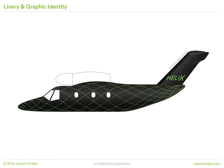More than just a superficially applied symbol, the livery is a three-dimensional super graphic wrapping continuously around the fuselage as if a structural part of the aircraft itself, emblematic of the deep design philosophy and of the advanced woven composite construction.